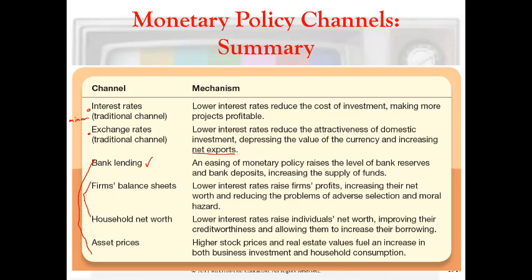And then the balance sheet slash net worth effect — we have the Bocephus principle at work: lower interest rates mean higher asset values, and that increases people's willingness to spend. There are a lot of things listed here, but there are really only a couple of key principles at work. If you understand basic supply and demand economics, you can work your way through the interest rate and exchange rate effects. And if you understand the relationship of interest rates and asset prices, you should have a pretty good handle on the balance sheet, net worth, and wealth effects.